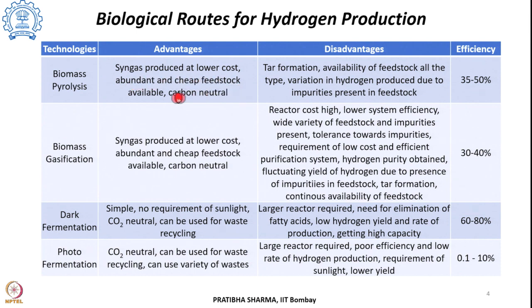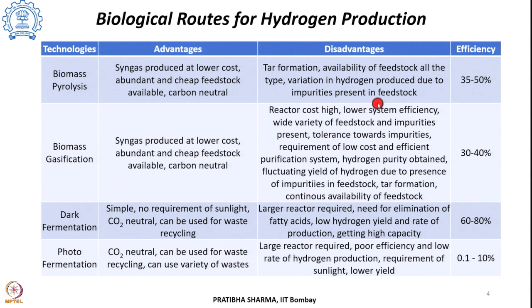There are biological routes for hydrogen production, such as biomass pyrolysis. The syngas produced using this method is at a lower cost, the feedstock is abundantly available and cheap, and the process is carbon neutral. But the major problem is tar formation in the production plant. Continuous availability of feedstock of the same type is a problem, as the variety of feedstocks leads to variation in the hydrogen being produced due to different impurities. Typical efficiency from biomass pyrolysis lies in the range of 35 to 50 percent.